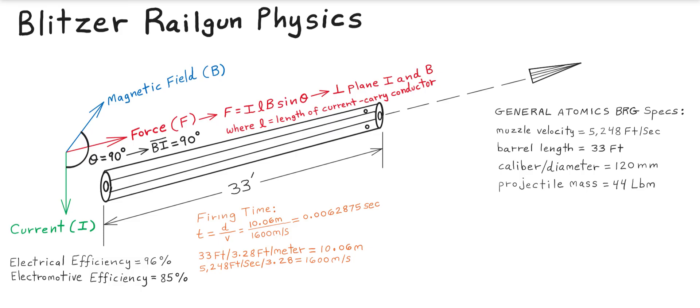We calculate the firing time as barrel distance divided by muzzle velocity, yielding 0.0062857 seconds. The projectile acceleration through the barrel is calculated at 254,473 meters per second squared.